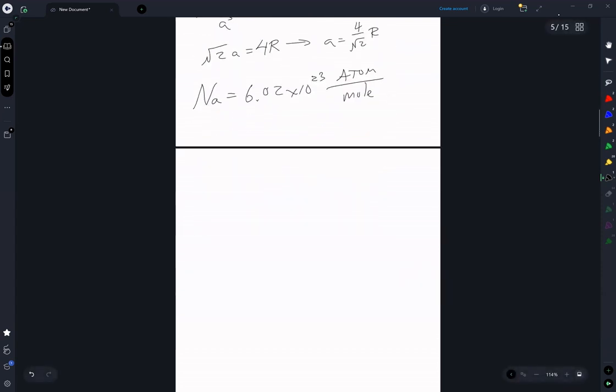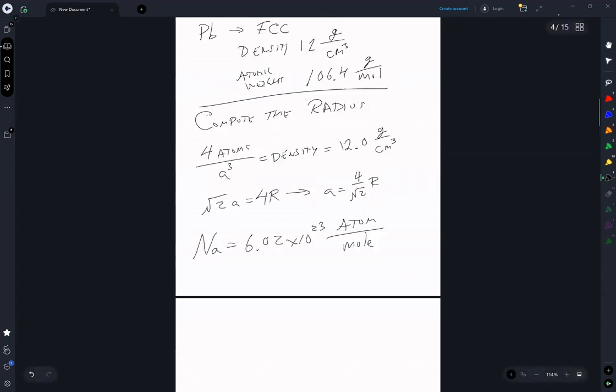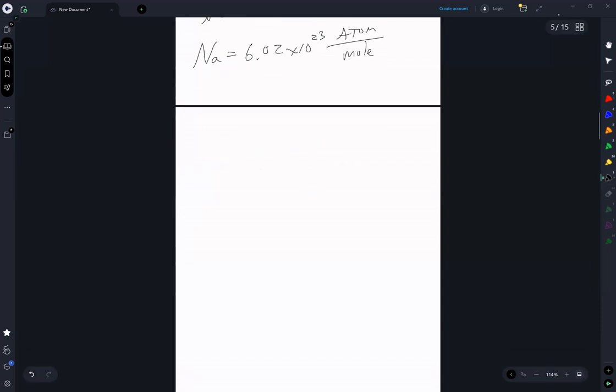And now it's just a unit conversion. So, substituting n and A, we get 4 atom per 4 over root 2 cubed r cubed.